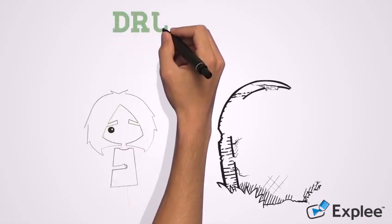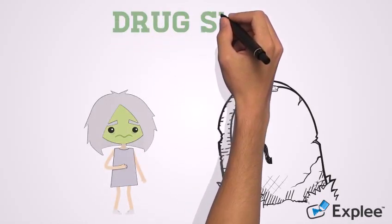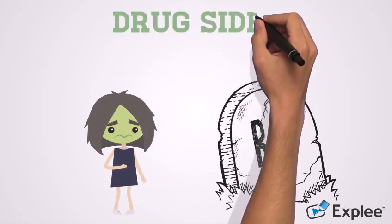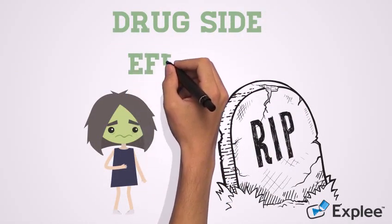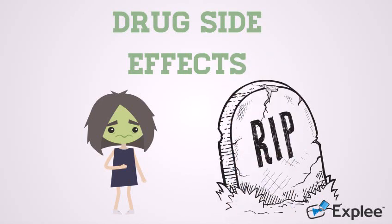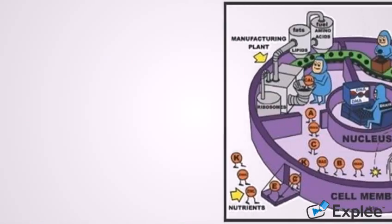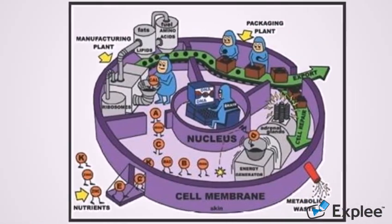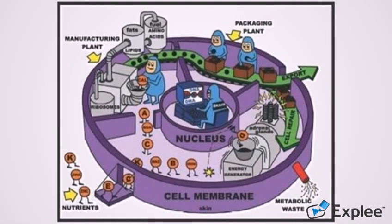Drug side effects increase the rate of death. To study drug side effects early, scientists benefit from systems analysis that are broadly predictive from cell type and tissue. They depend on cellular metabolism that acts in many human diseases and phenotypes. The metabolism provides a great model to study drug side effects.